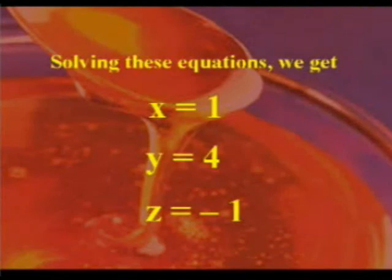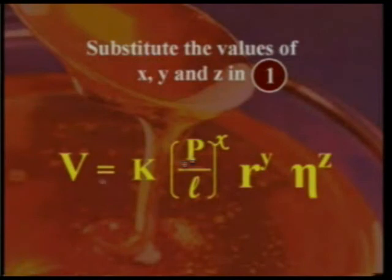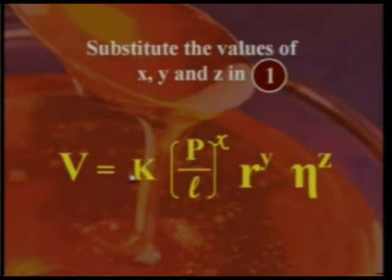Solving these three equations, we get x equal to 1, y equal to 4, and z equal to minus 1. Substituting these values back into equation 1, we get the Poiseuille's equation: V equal to K into (P by l) power 1, r power 4, eta power minus 1.